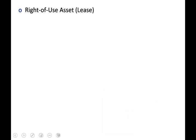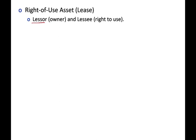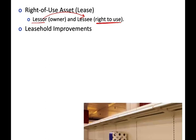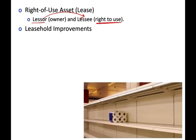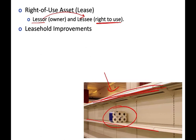Another intangible is the right-of-use asset, which relates to a lease. When you lease a car or a building, the owner is the lessor and the person leasing it is the lessee. The right to use that building is an intangible asset because it gives you a right or privilege. When you lease a store, you might put shelves in it — those shelves are leasehold improvements. Since they improve the property but stay behind when you leave, you can also consider them intangibles.